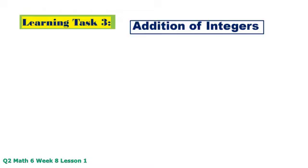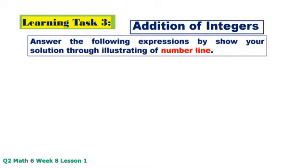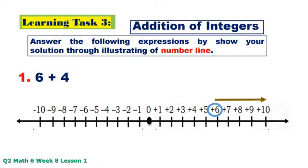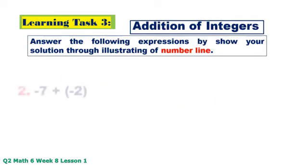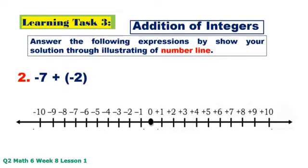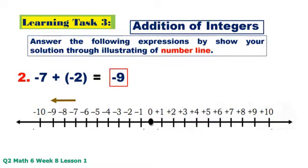Learning Task 3 — Addition of integers. Answer the following expressions by showing your solution through illustrating a number line. Number 1: positive 6 plus positive 4 — counting 4 units to the right: 1, 2, 3, 4. The answer is positive 10. Number 2: negative 7 plus negative 2 — counting 2 units to the left: 1, 2. The answer is negative 9.